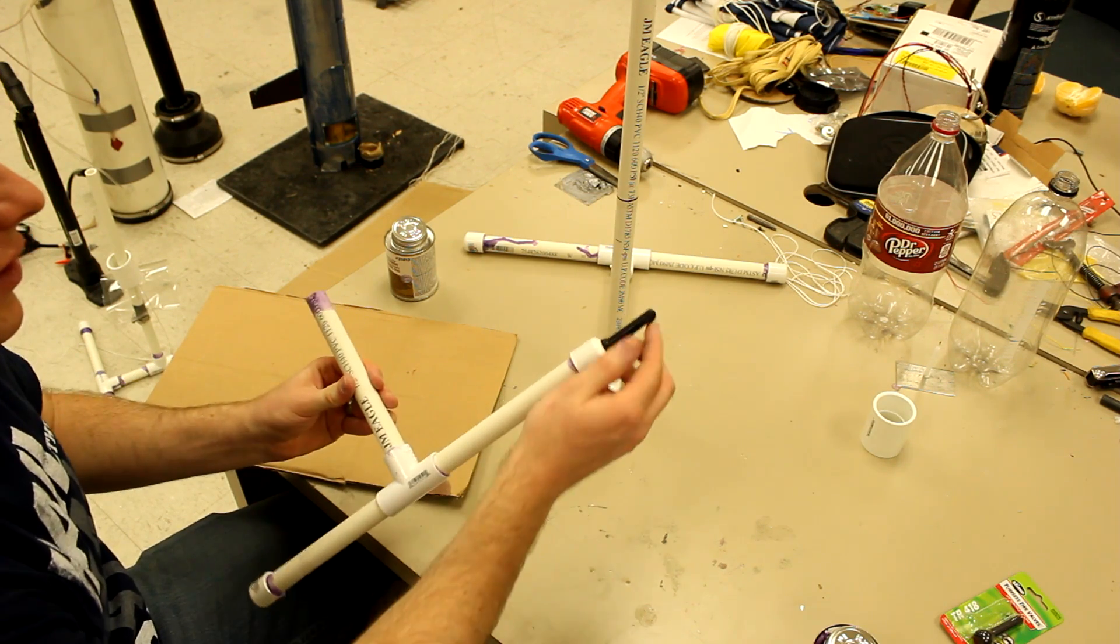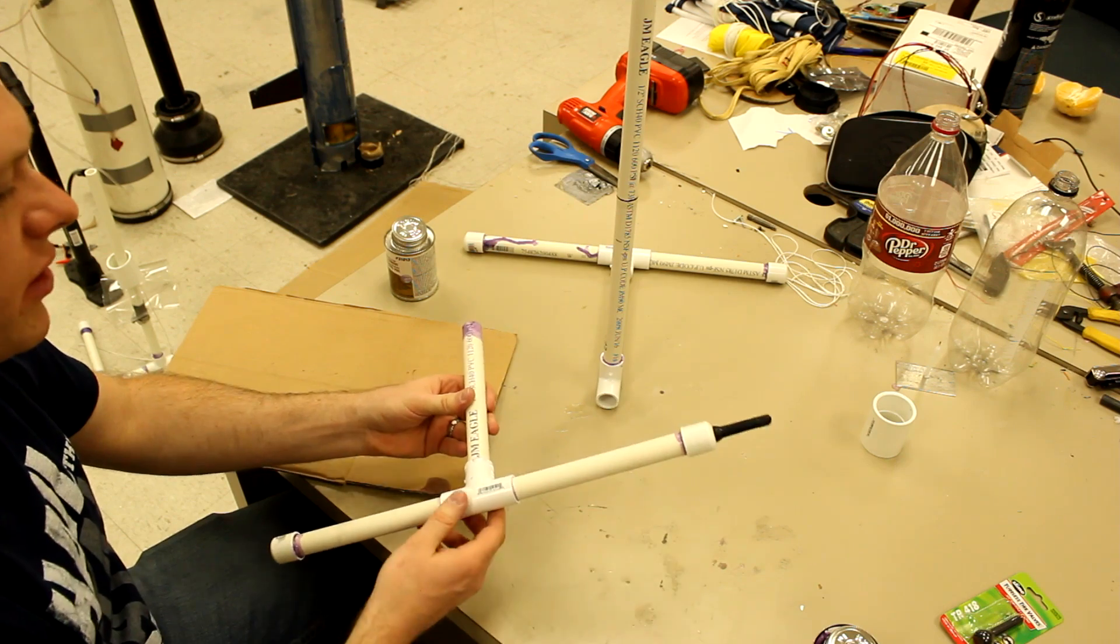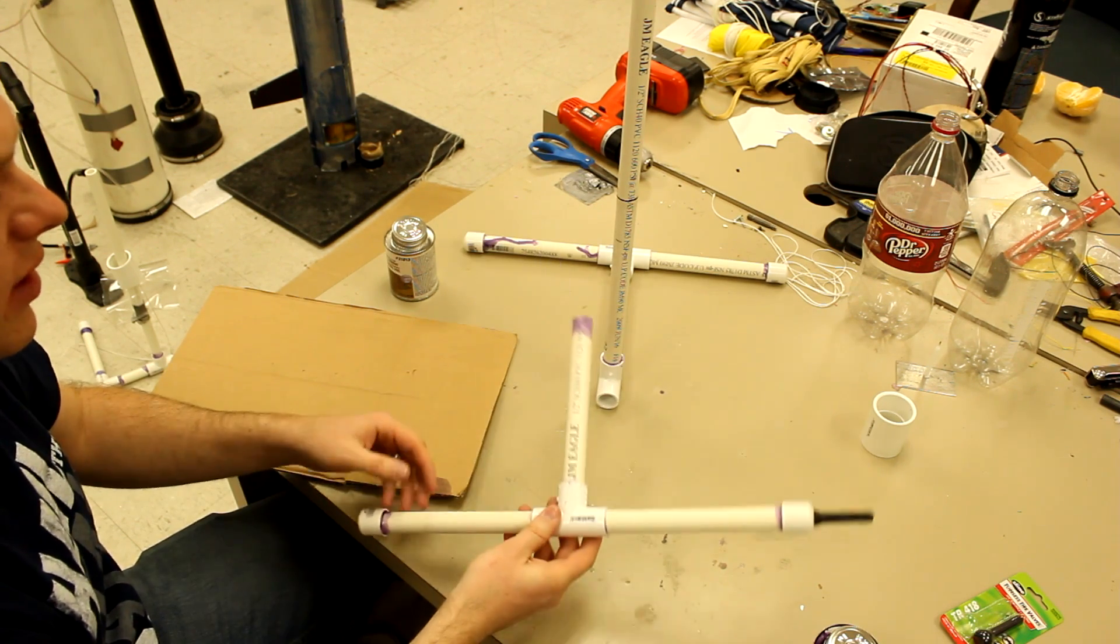Alright, now we want to put in our tee that has the valve stem in it and attach it to our launch rail. Now if you have a preference, make sure that you turn this to whichever side you want it on.